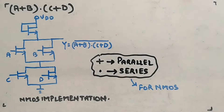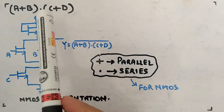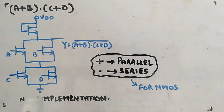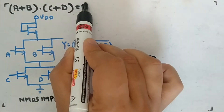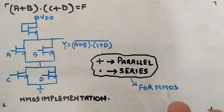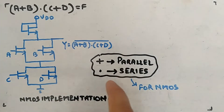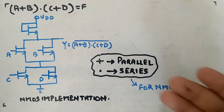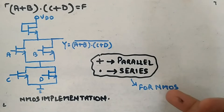Let's see an example: (a + b)·(c + d). This is the function we have to implement. Let's say this is your f — you did some truth table work and Karnaugh map gave you this expression, and you have to implement it using NMOS, PMOS, as well as CMOS. First, I am showing you the NMOS implementation. The rule is: plus means parallel connection, dot means series connection.